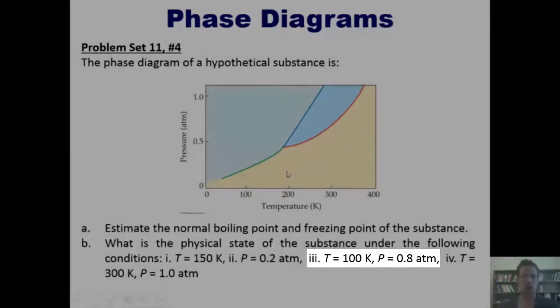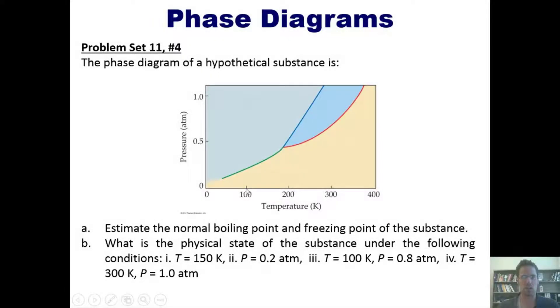I'll go to 100 Kelvin and then I will trace vertically up to where 0.8 atm is. I'm not sure exactly where that is, but it is obviously going to be in the region of the phase diagram that corresponds to the substance being a solid, which means that at that temperature and pressure, this substance is a solid.